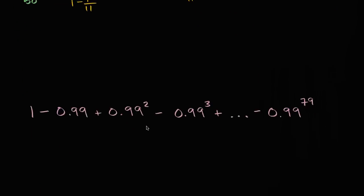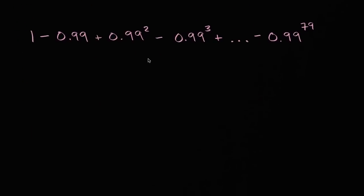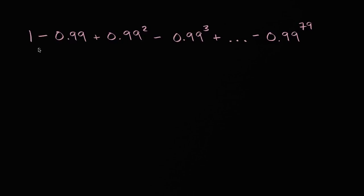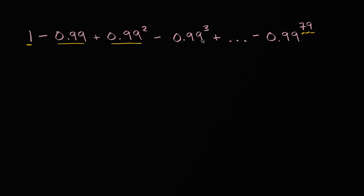Let's do another one — this is kind of fun. This is more clearly a geometric series, and let's first think about how many terms we're going to sum. You might be tempted to say there are 79 terms, but be very careful because the first term is when we're taking things to the zeroth power — 0.99 to the zeroth power. The second term is to the first power, the third term to the second power, the fourth term to the third power, and so on. So this last term here is the 80th term.